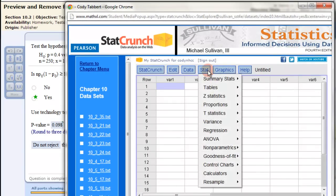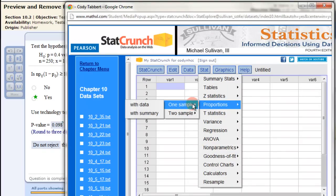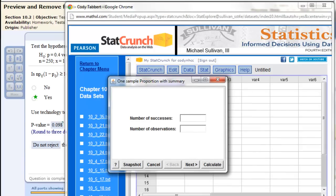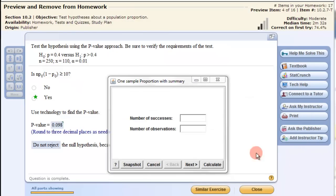Go into the Stat, Proportions, One Sample, and then we have a Summary of Data. The number of successes are the x-value, 110. The number of observations was the n, 250. Click Next.